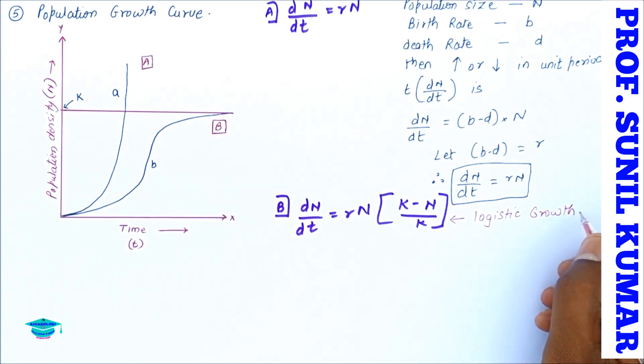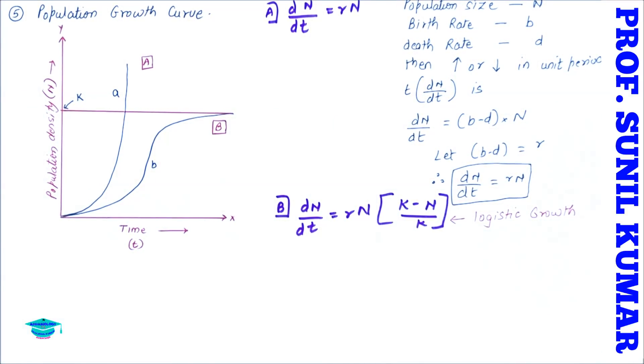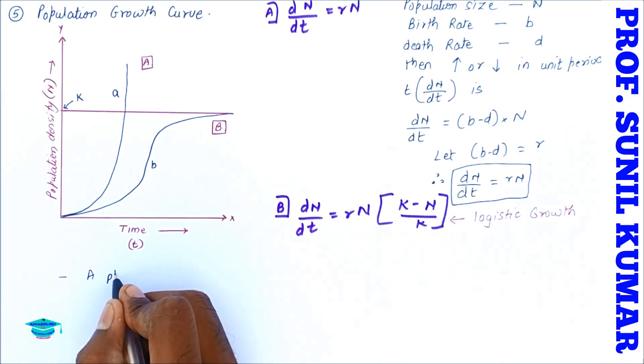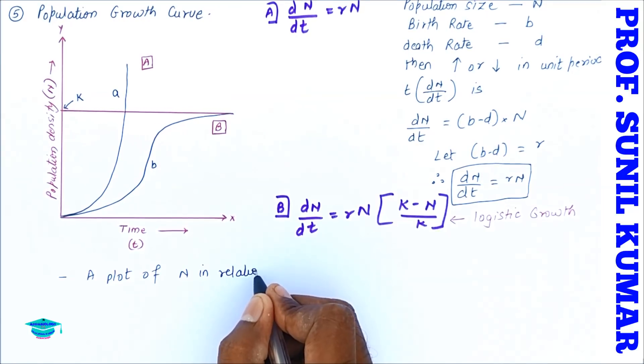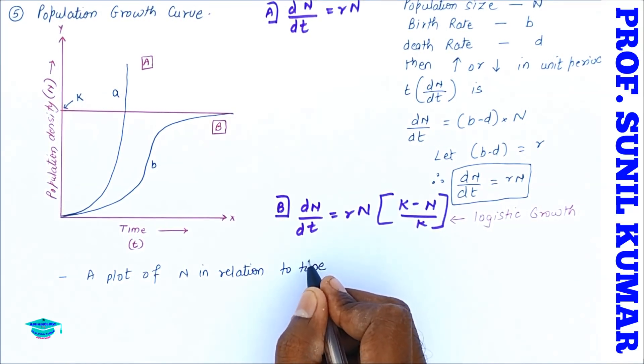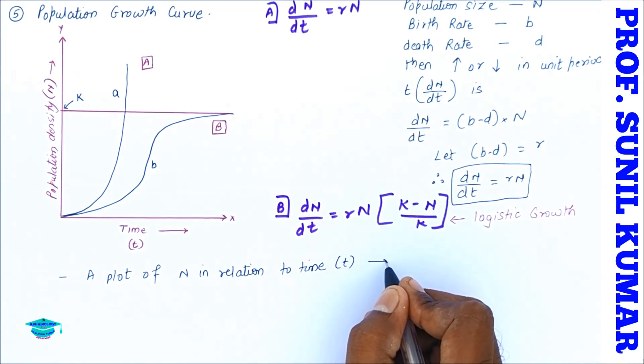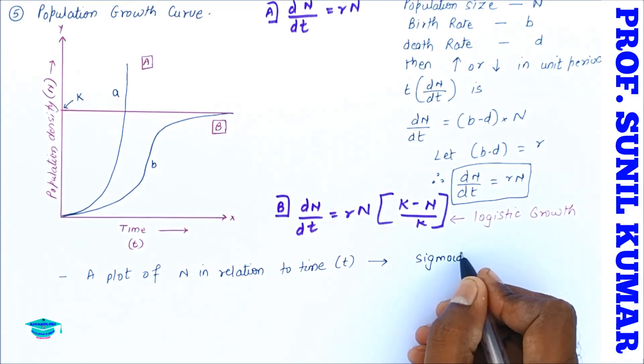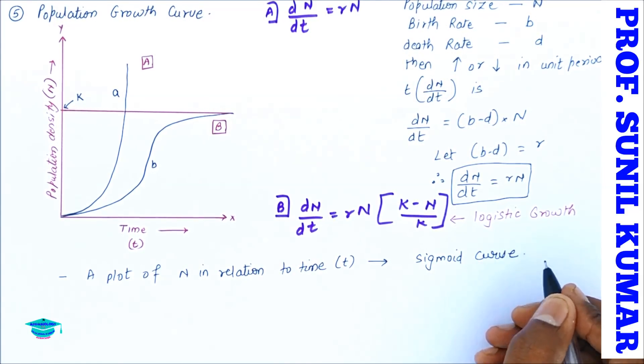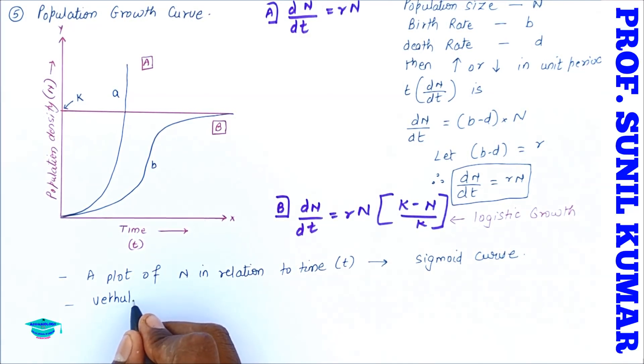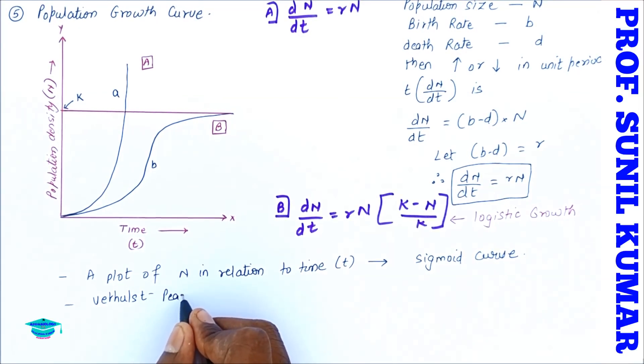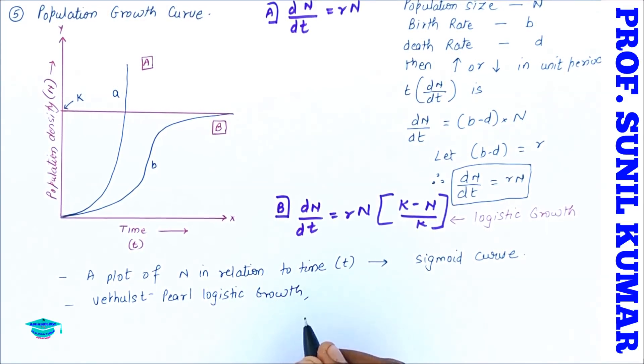So what is this B formula? It is dN/dt is equal to rN times (K minus N) upon K. This is basically representing a logistic growth where K is the carrying capacity. It means that the population size is not exceeding the carrying capacity. A plot of N in relation to time t gives the sigmoid curve or S-shaped curve. Now this growth is basically called as Verhulst-Pearl logistic growth.